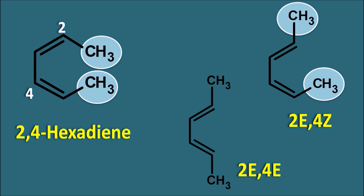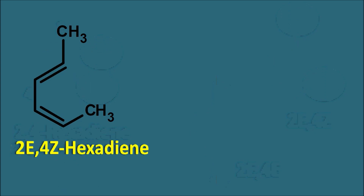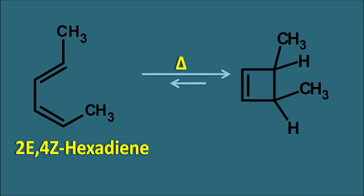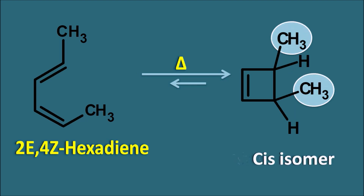Let us take the 2E4Z configuration and see what happens in the electrocyclic reaction. In 2E4Z hexadiene, one methyl group is opposite and another methyl group is on the same side of the double bonds. This compound can undergo the electrocyclic reaction by either thermal or photo source. When we use the thermal source, this compound is converted to give a product where both methyl groups are on the same side — this is the cis isomer of 3,4-dimethylcyclobutene.